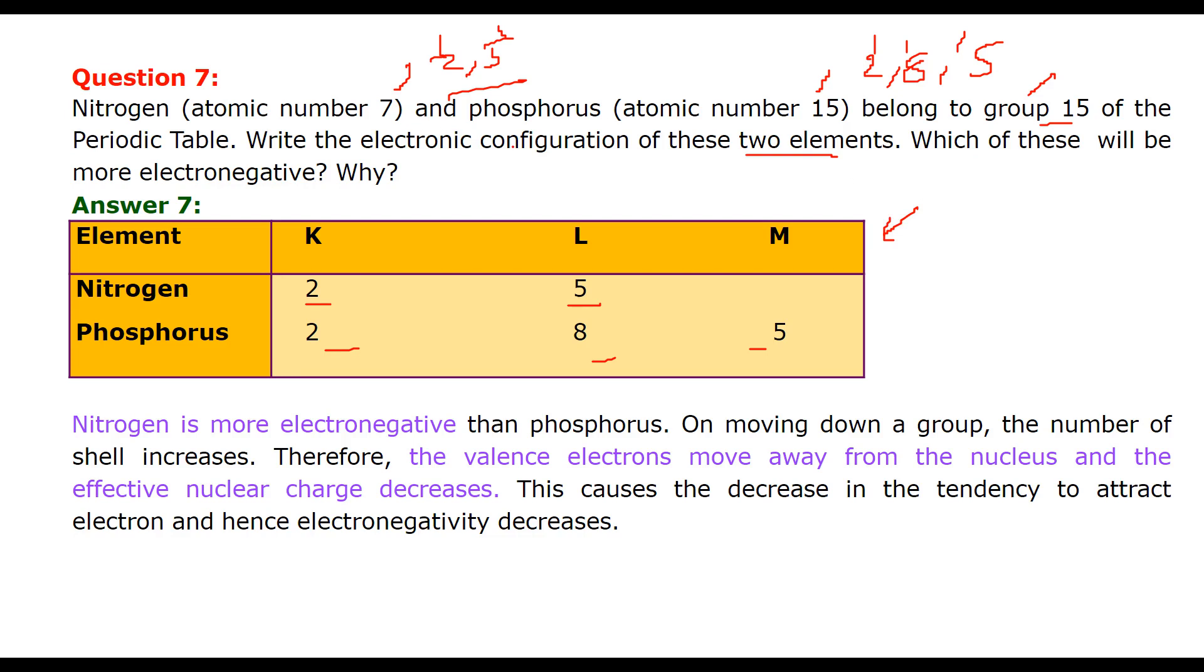The answer is nitrogen is more electronegative than phosphorus. Because when we move down the group, the number of shells increases, as you see here. And the valence electron moves away from the nucleus. More it is closer, more it has strength. So when it goes out, that is, number of shells increases, the effective nuclear charge increases. So this causes a decrease in the tendency to attract electron. And hence, the electronegativity will decrease.